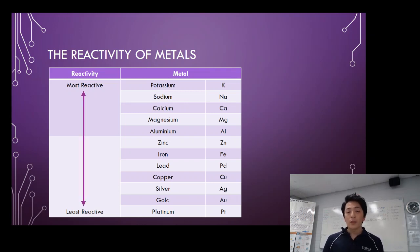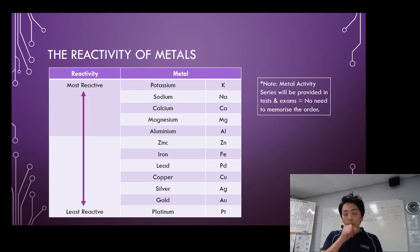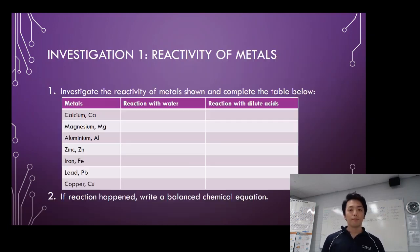So that's in order of their reactivity. Now you will get something like this in the test or exam because you need to be able to use them, but you don't need to memorize them because they'll be given to you. You will do this investigation so you can confirm what you see in terms of reactivity of metals would be something that you would see in the activity series.